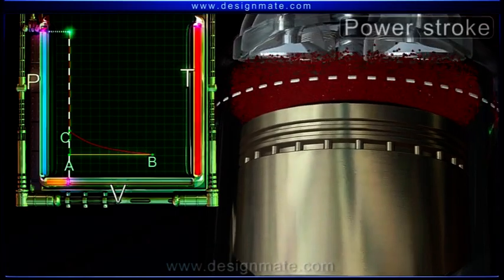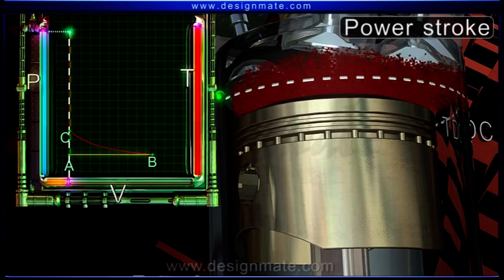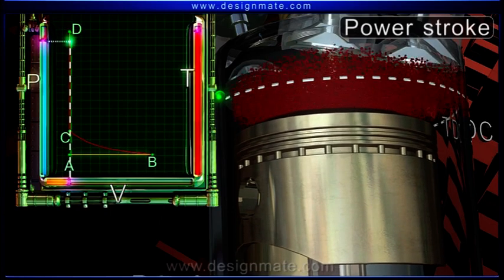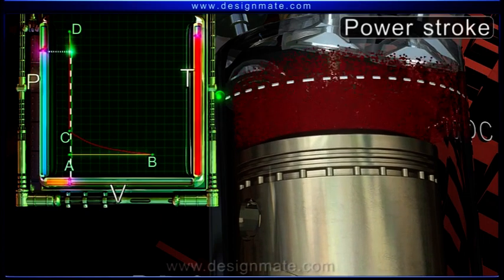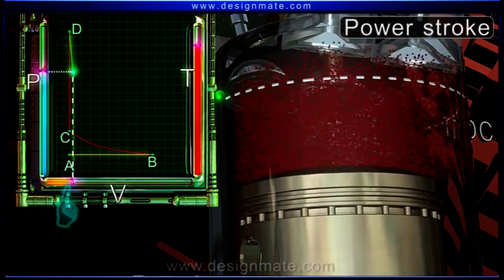Power stroke. During this stroke, since both the valves are closed, the increased pressure acts on the face of the piston. So, the piston moves down towards BDC. As a result, volume occupied by the gases increases.